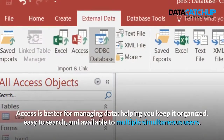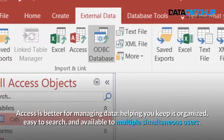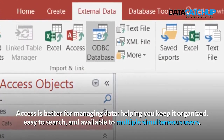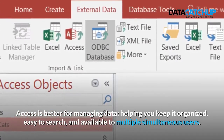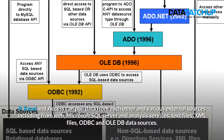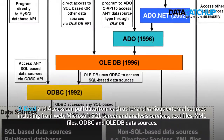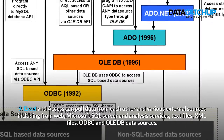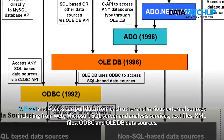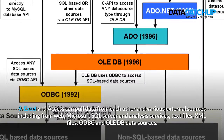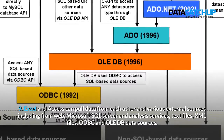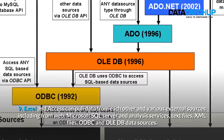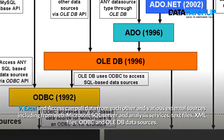9. Access is better for managing data, helping you keep it organized, easy to search, and available to multiple simultaneous users. Excel and Access can pull data from each other and various external sources including the Web, Microsoft SQL Server, Analysis Services, text files, XML files, ODBC, and OLEDB data sources.